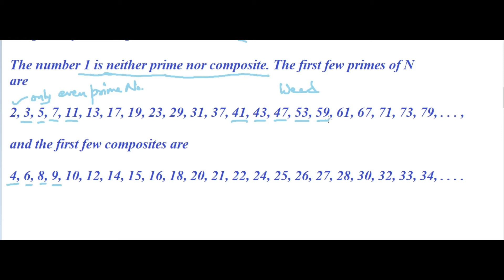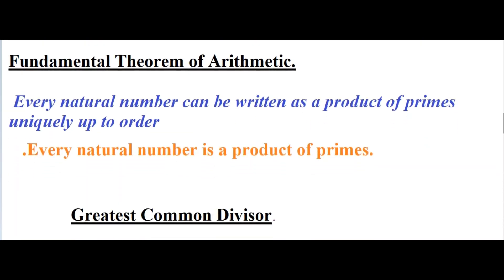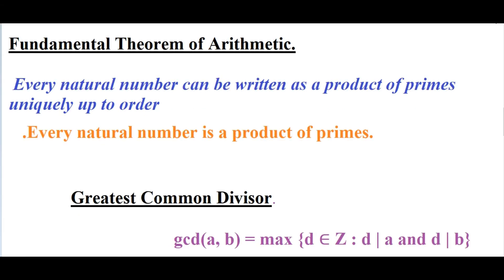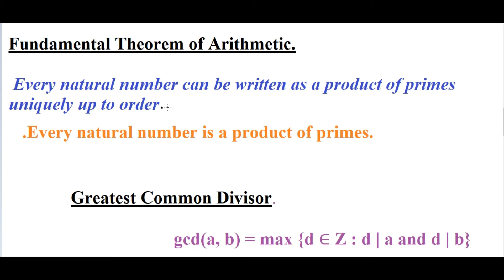Let's move further. The next topic is the Fundamental Theorem of Arithmetic. It states that every natural number can be written as a product of primes uniquely, up to order. In normal words, any natural number can be written in prime factors. For example, 4 = 2 × 2. The number 1 is not required since it is not prime. Every natural number is a product of primes — whether it is a prime itself, it is still considered a product of primes.